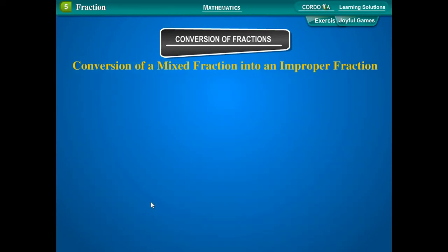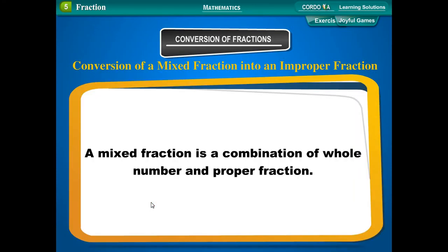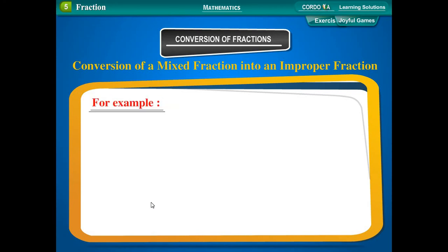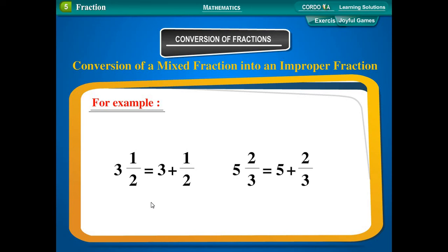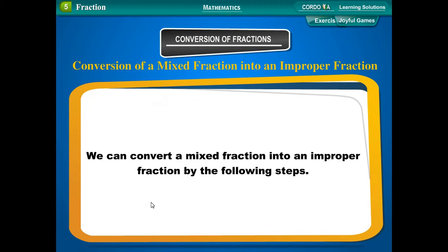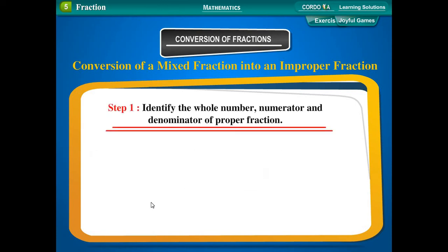Conversion of a mixed fraction into an improper fraction. A mixed fraction is a combination of a whole number and a proper fraction. For example, 3 and 1 upon 2 is equal to 3 plus 1 upon 2, and 5 and 2 upon 3 is equal to 5 plus 2 upon 3. Step 1: Identify the whole number, numerator, and denominator of the proper fraction.